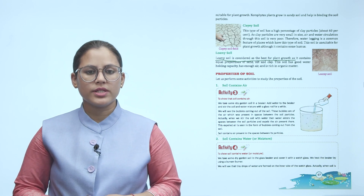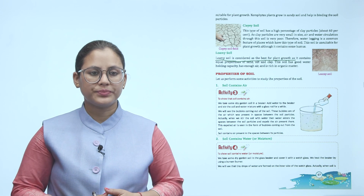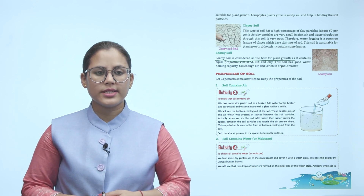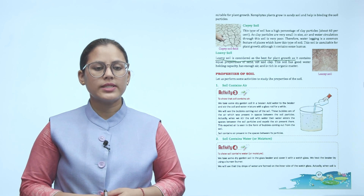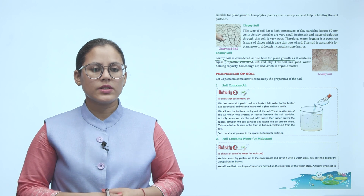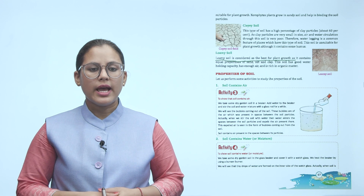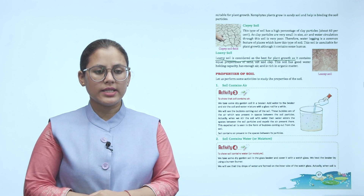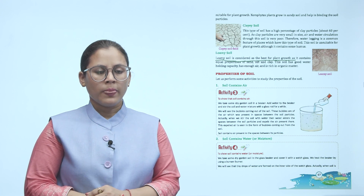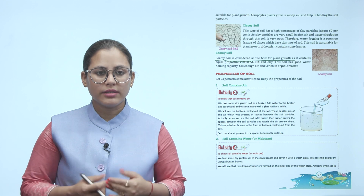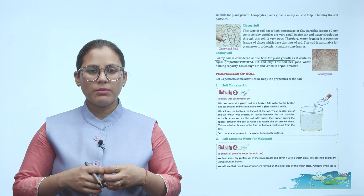Properties of soil — Activity 3: To show that soil contains air, we take some dry garden soil in a beaker, add water and stir the mixture. We will see bubbles coming out of the soil. These bubbles are air which was present in spaces between the soil particles. When we stir the soil with water, water enters the spaces between the soil particles and expels the air present there. This expelled air is seen in the form of bubbles coming out from the soil.